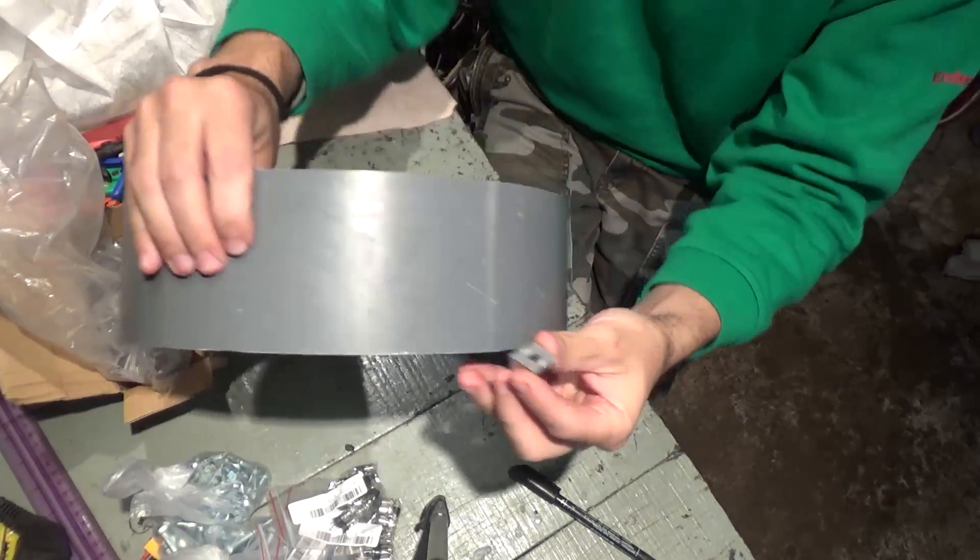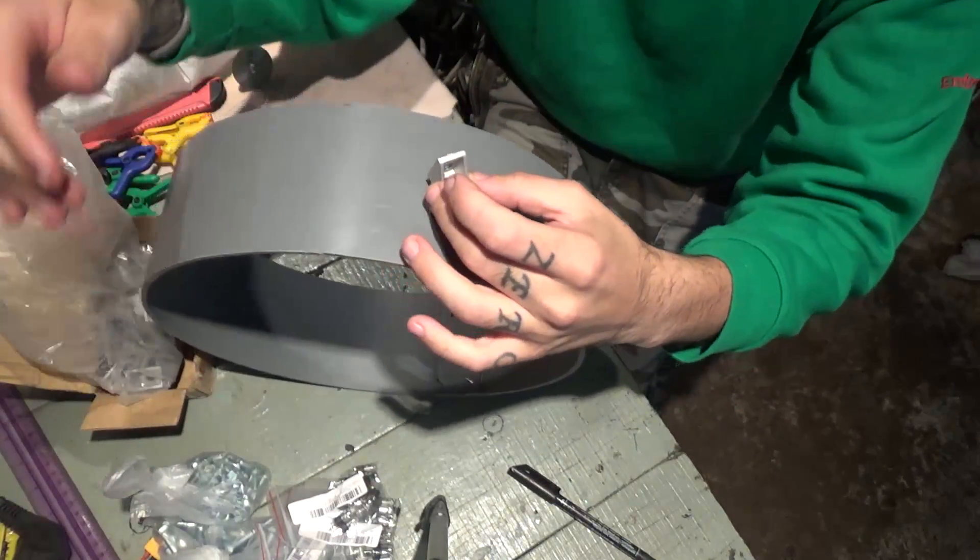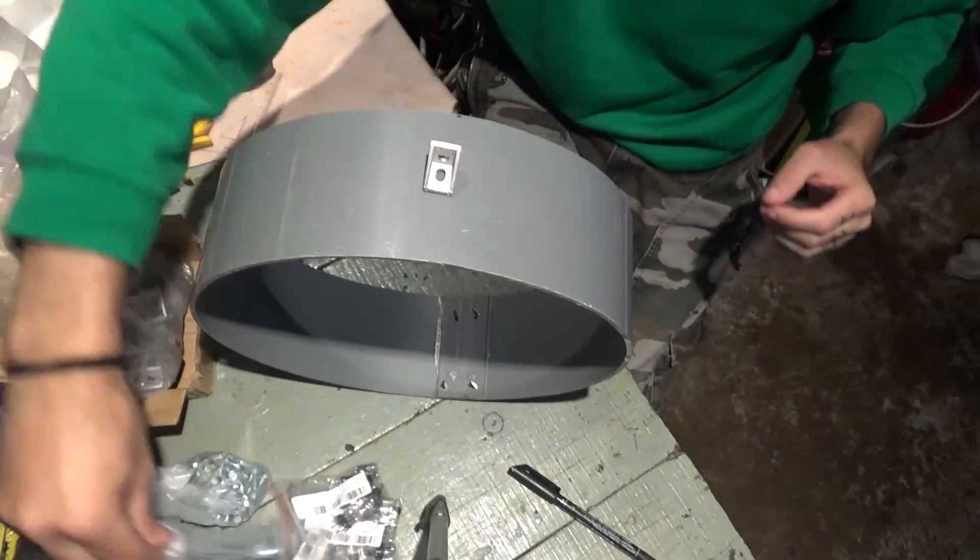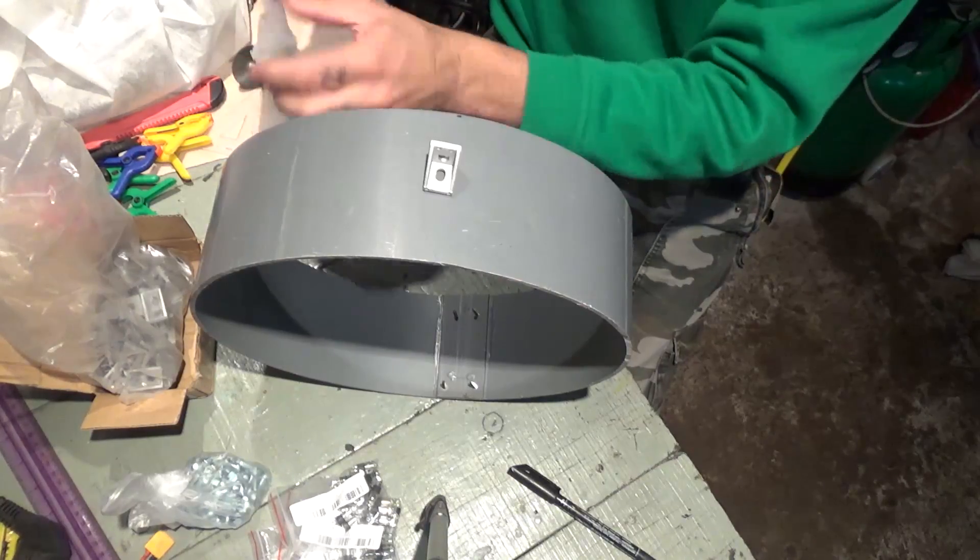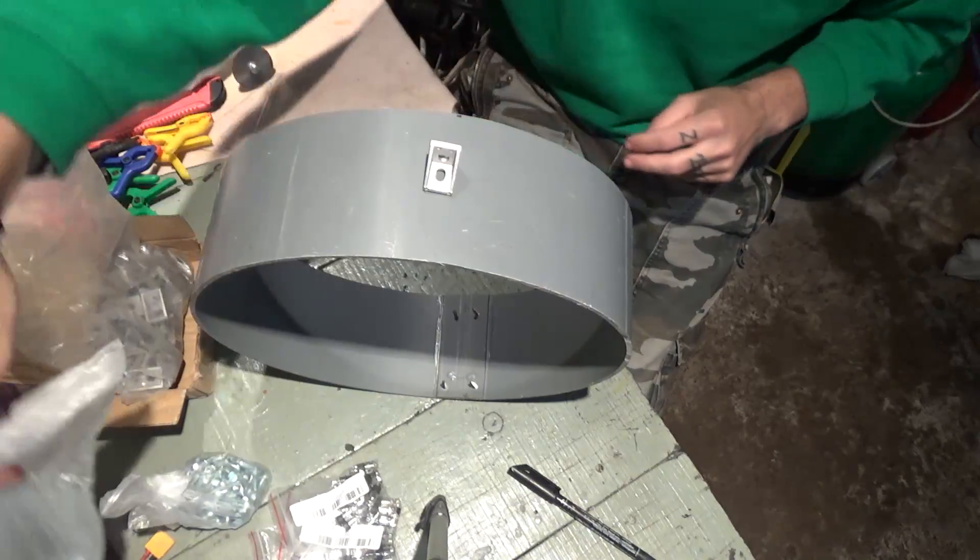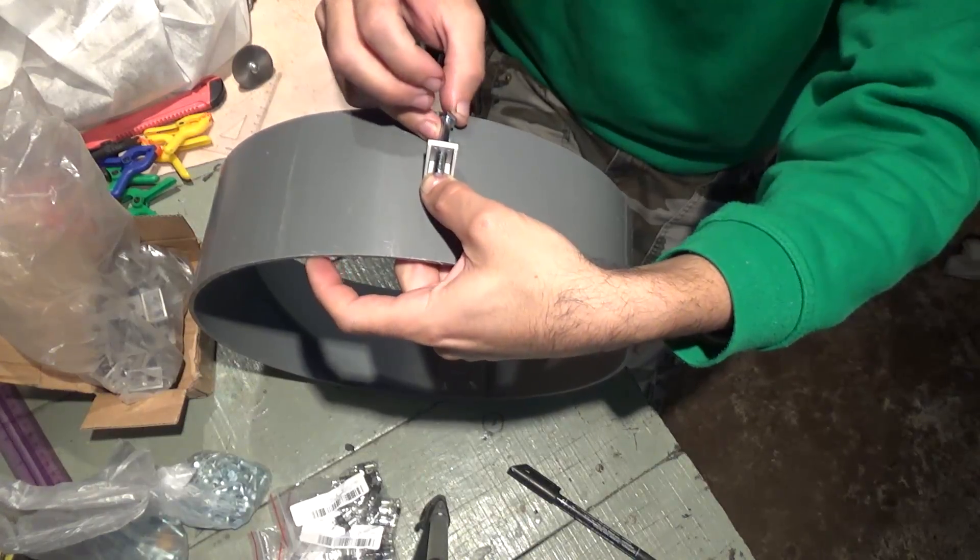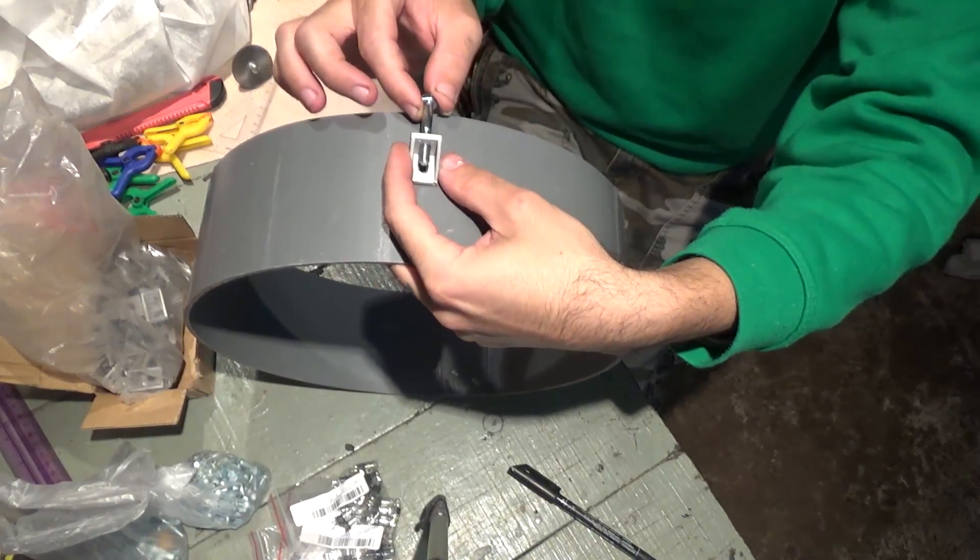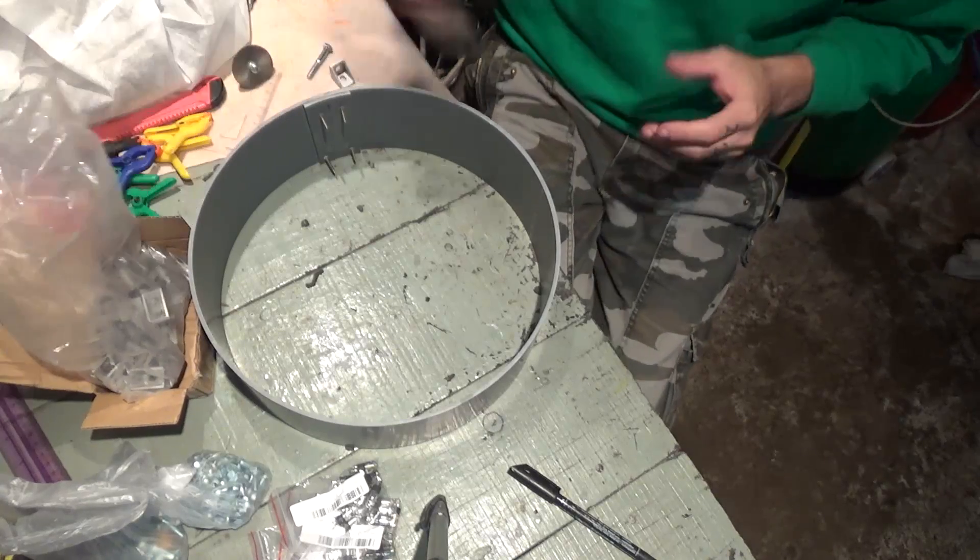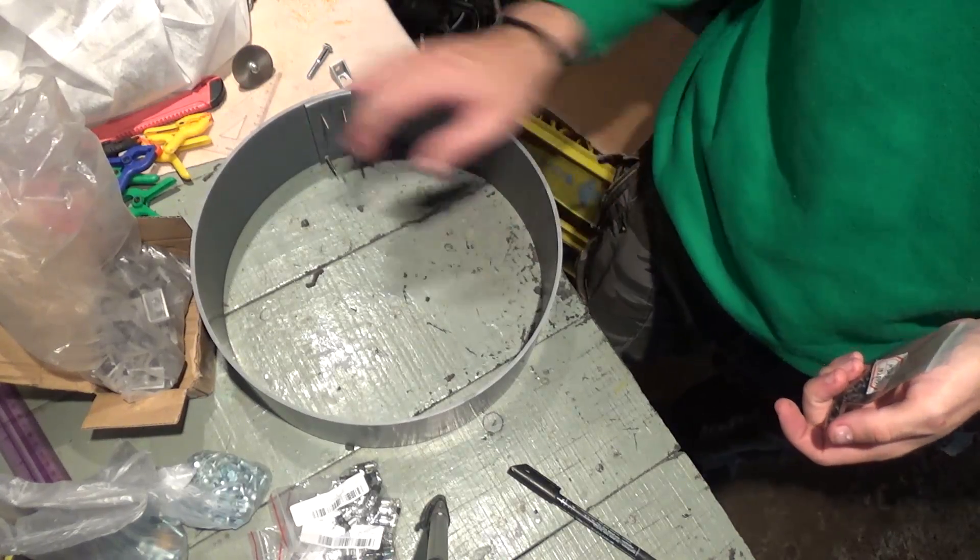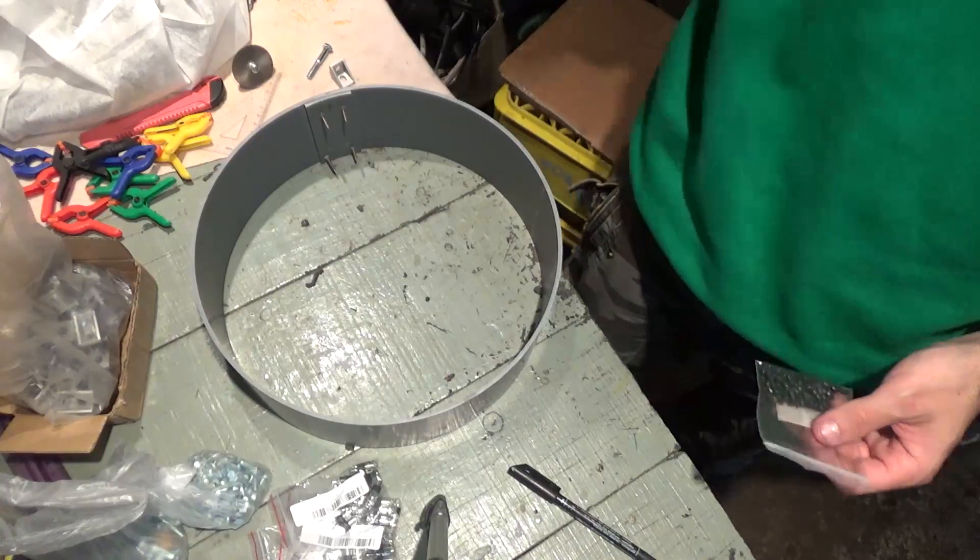So these will go more or less like this, and then the bolt will go through. These will hold the drum hook in place. Let me get a 12 inch hook and a drum head and show you how it goes.